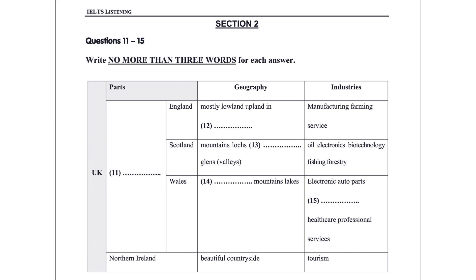In Scotland, 5 million people live in an area not much smaller than England. The country boasts vast open spaces and is one of the last areas of unspoiled natural beauty in Europe, featuring mountains, lochs — that is lakes — and glens, that is valleys. Modern industries including oil, electronics, and biotechnology, as well as more traditional industries such as fishing and forestry, drive the economy. The largest city is Glasgow, but the capital is Edinburgh.